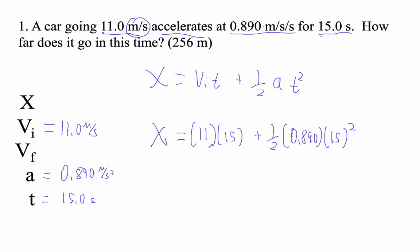Okay. So, and literally, this is what I type in my calculator. Only I don't use parentheses. I just go 11 times and then I use times. So I'll say what I'm typing in. 11 times 15, plus 0.5 times 0.89 times 15. And then hit the squared button.